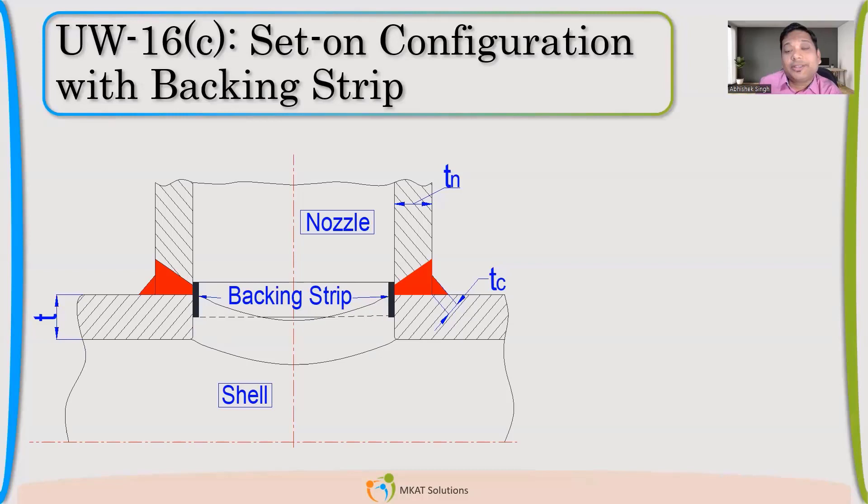The angle, root face, root gap, everything is part of the welding qualification. So you will not get that information in code. What code gives is the additional fillet weld. You can see here the TC. So after welding that full penetration weld, what minimum fillet weld you need to have at this junction, that is what code gives. Anybody can tell me what this TC value is?